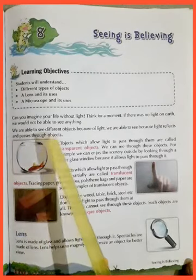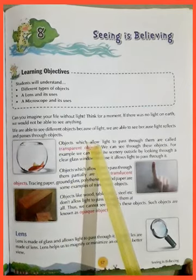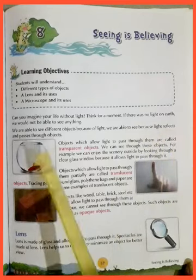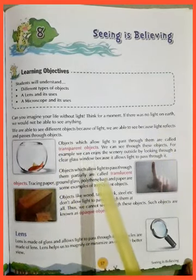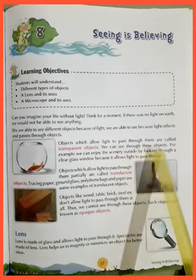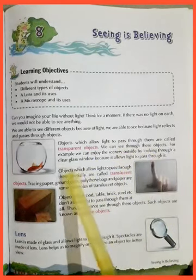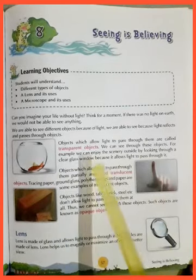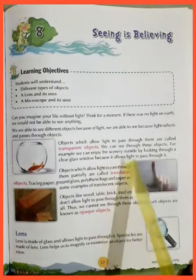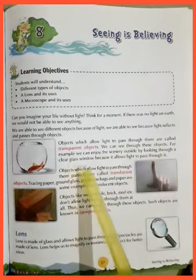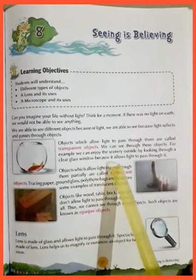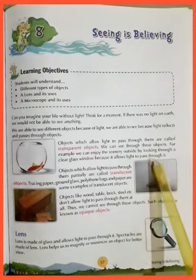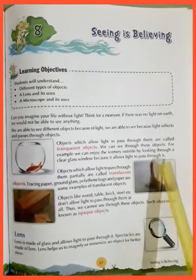We are able to see different objects because of light. We are able to see because light reflects and passes through objects. Objects which allow light to pass through them are called transparent objects. We can see through these objects — for example, we can enjoy the scenery outside by looking through a clear glass window because it allows light to pass through it.